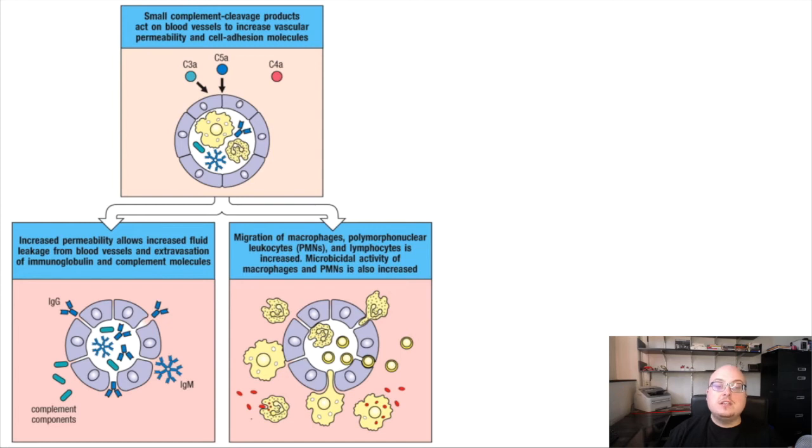Besides these sort of circulating molecules like complement and antibody, vasodilation also allows the extravasation or the movement out of the blood vessel, that's what extravasation is, of immune cells like macrophages, granulocytes, and lymphocytes. And in particular, this allows activated effector lymphocytes like CD8 T cells, which have seen their antigen in the lymph node or the spleen, to actually migrate to the site of infection in the tissue, escape the blood vessel, and find its antigen in the tissue itself.